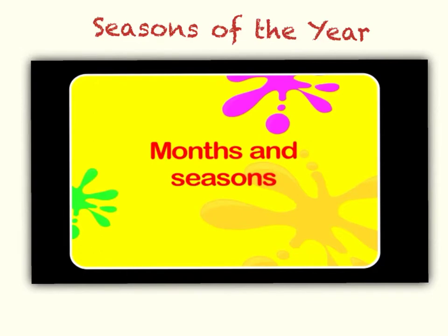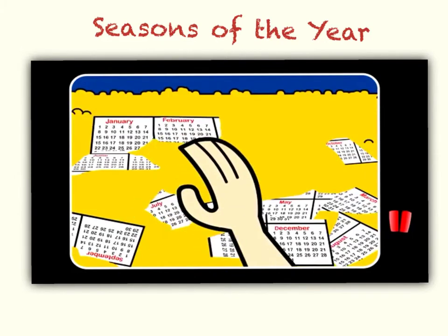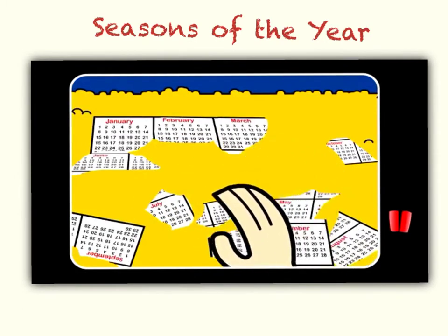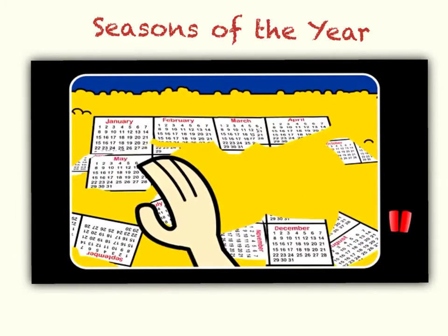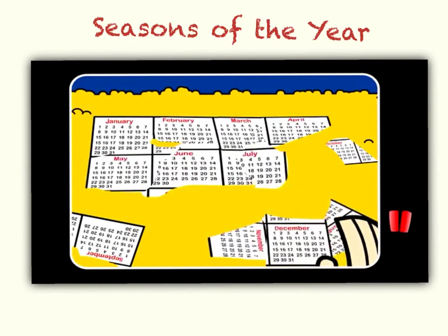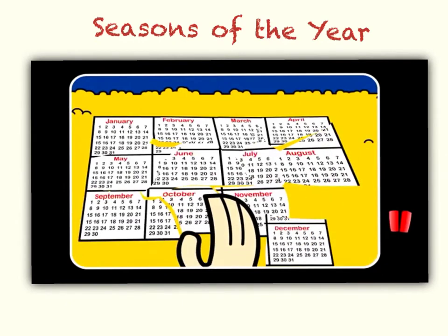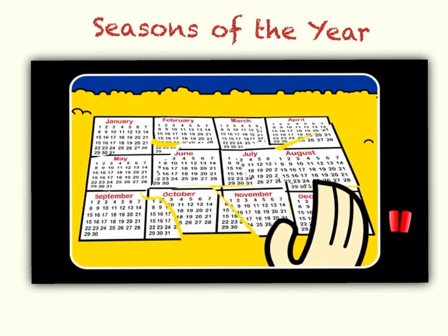Can you help me? Someone cut up my calendar and I need to put it back together. I have all the names of the months but they're all muddled up. Here, let me help. Let's put these in order: January, February, March, April, May, June, July, August, September, October, November, and December. There we go.